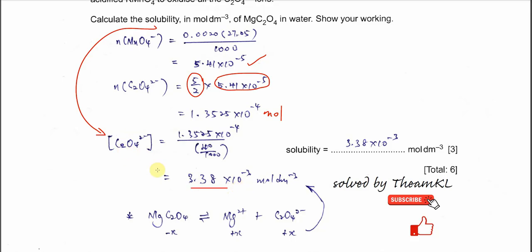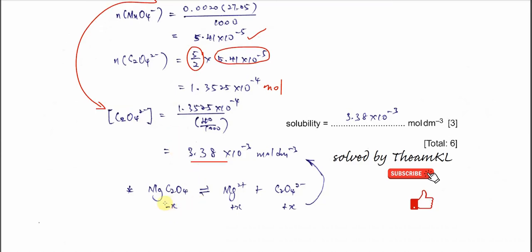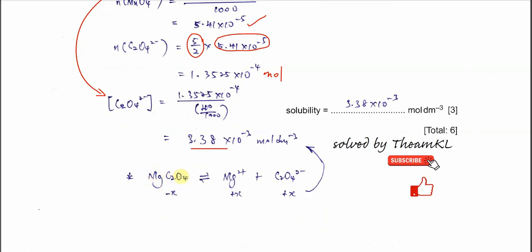Why? Because when the magnesium ethanedioate is dissociated, it forms magnesium ion and ethanedioate ion in the same ratio. When x moles dissociate, it will form x moles of magnesium ion and x moles of ethanedioate ion. So the concentration of ethanedioate can represent the solubility of the salt.